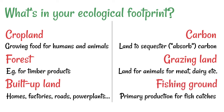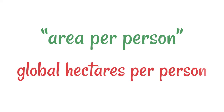And then lastly, what about fishing ground? We can't exactly measure that as an area of land because fish are so mobile and spread over a large area, and they use ideas of primary production to calculate this. But essentially fishing ground must be taken into account with an ecological footprint. It's always measured in area per person, and a common and convenient way to do this is global hectares per person.